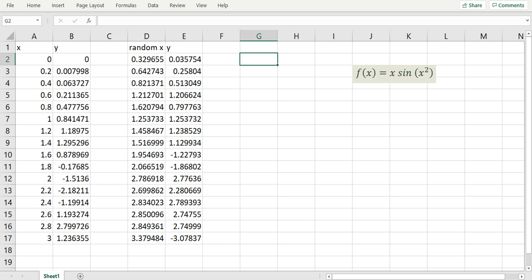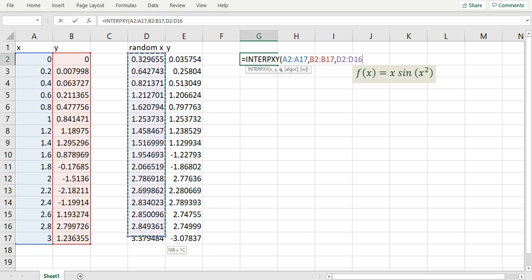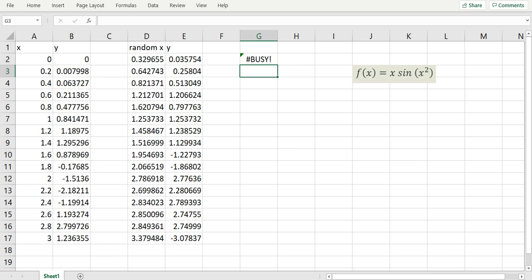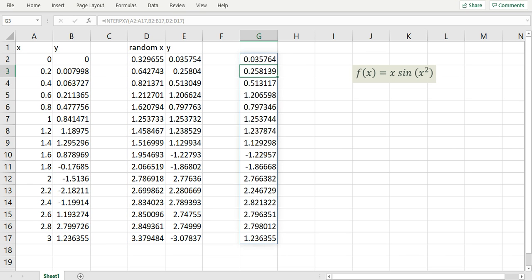So I'm going to use INTERPXY to interpolate at these random x values. The first parameter to INTERPXY is my x values and corresponding y vector. And I'm interpolating at these random x values. I happen to be using XLAP365, and I can take advantage of the spill feature here by simply hitting enter. And INTERPXY will compute all the interpolation points and spill into neighboring cells, as you see here.